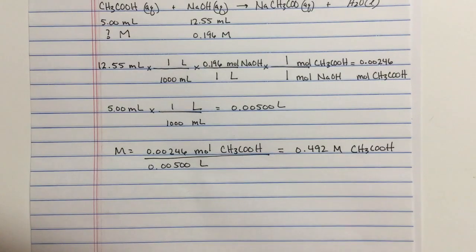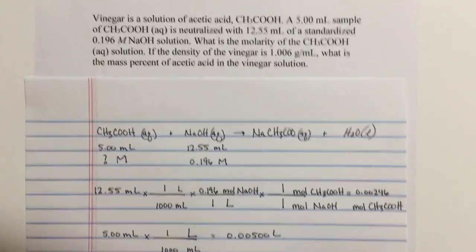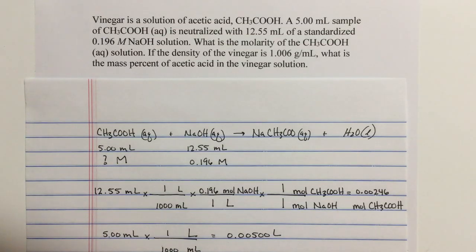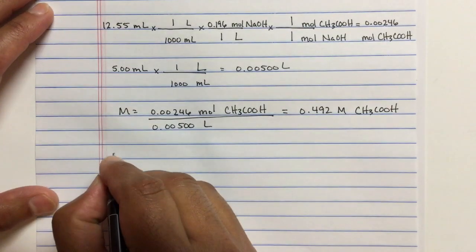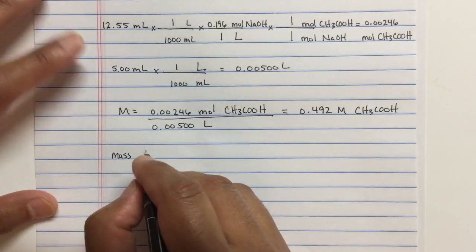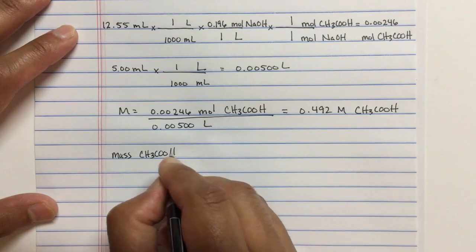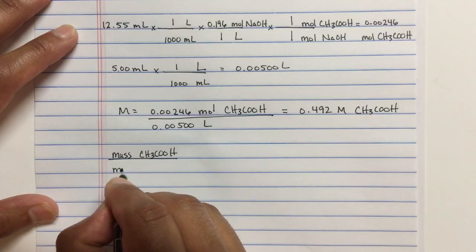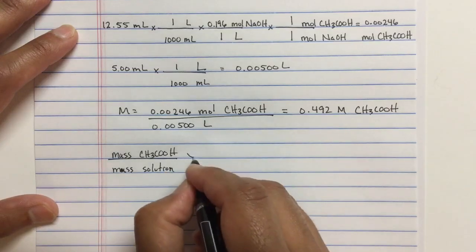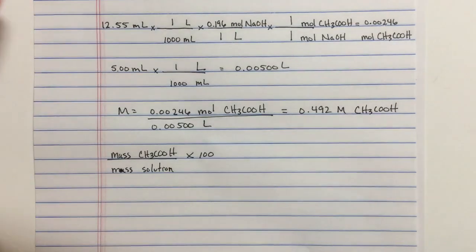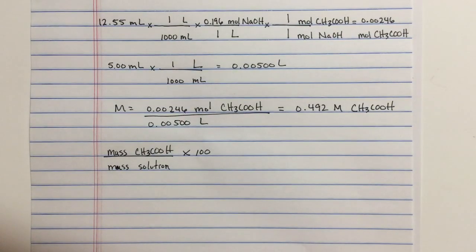Now there was a second problem. The second problem was, okay, we find the molarity. Let's use the molarity to find the mass percent of the acetic acid in the vinegar solution. In other words, mass percent is the mass of acetic acid divided by the mass of the solution. And because we're looking for the percentage, we'll multiply that ratio by 100.